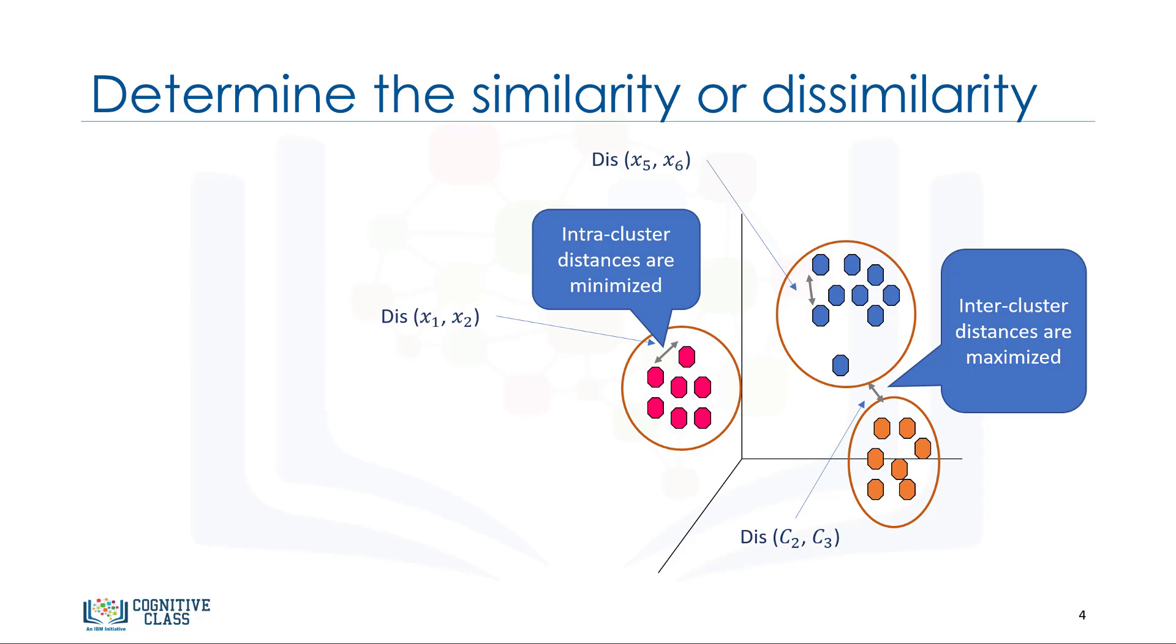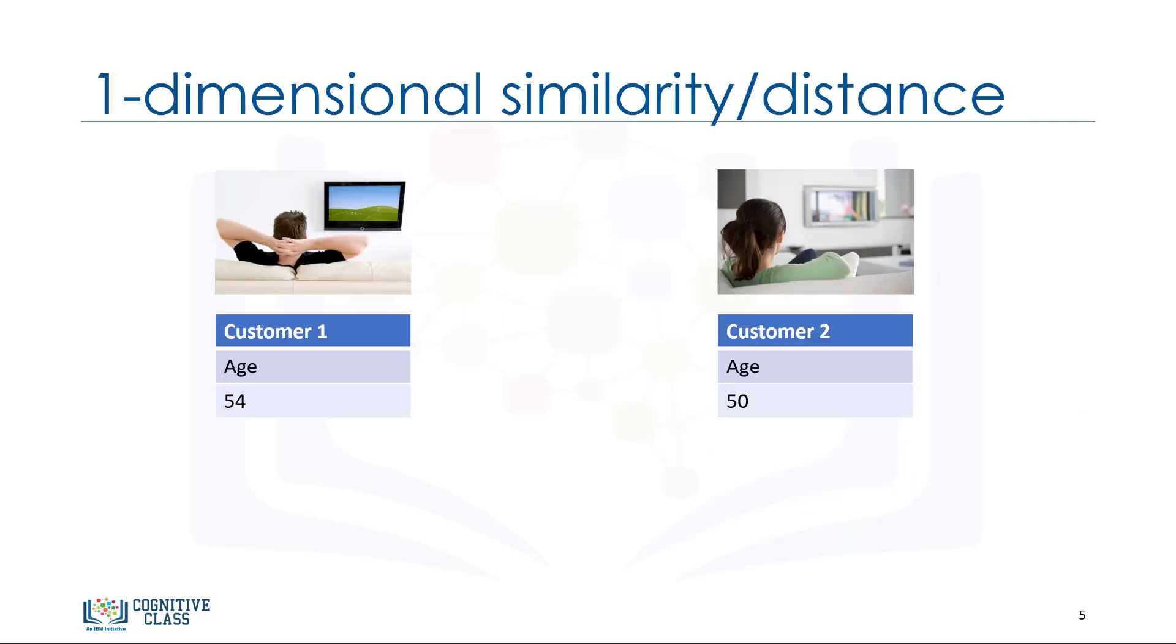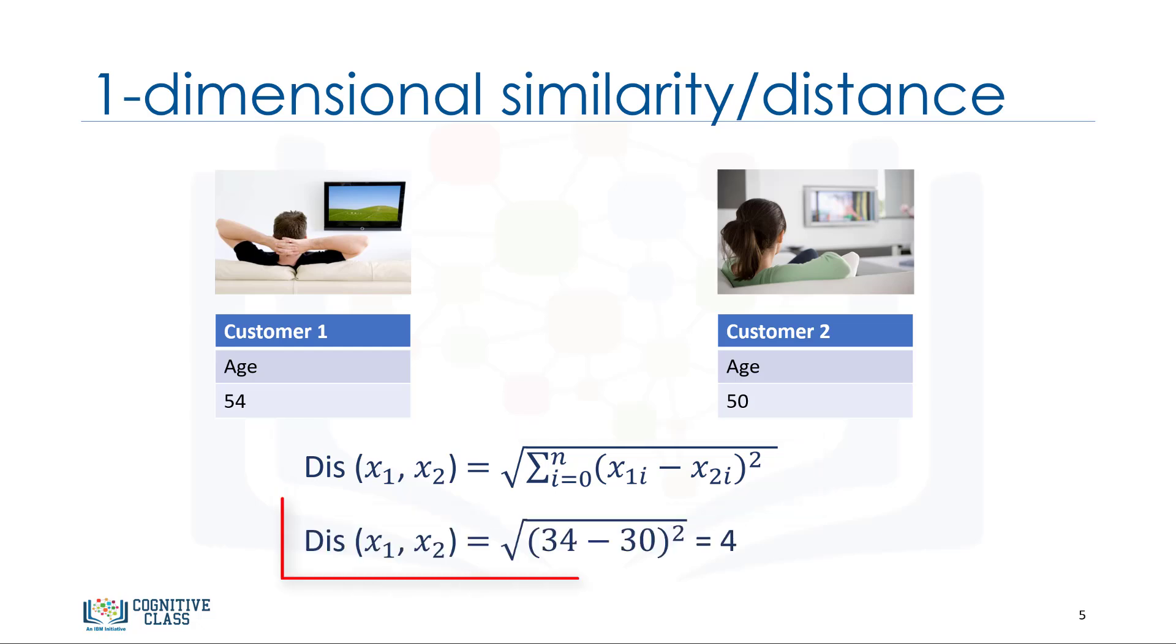Now, the question is, how can we calculate the dissimilarity or distance of two cases, such as two customers? Assume that we have two customers. We'll call them customer one and two. Let's also assume that we have only one feature for each of these two customers, and that feature is age. We can easily use a specific type of Minkowski distance to calculate the distance of these two customers. Indeed, it is the Euclidean distance. Distance of x1 from x2 is root of 34 minus 30 power 2, which is 4.